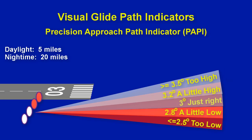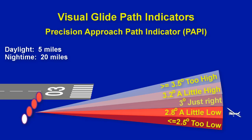The precision approach path indicator, or PAPI, is a little more precise than VASI. Its range is five miles during the day and up to 20 miles at night. Four white lights means you're too high and above 3.5 degrees. One red light means just a little high, or about 3.2 degrees. Two red and two white lights means you are right on the glide path at three degrees. A little too low is three red and one white light at 2.8 degrees, and too low is four reds at less than 2.5 degrees.